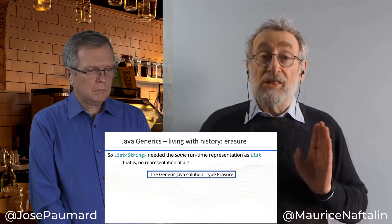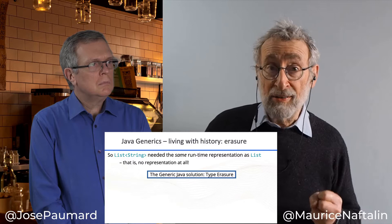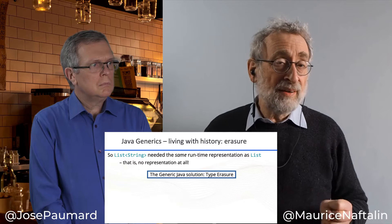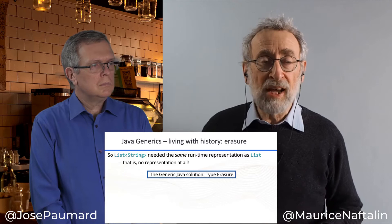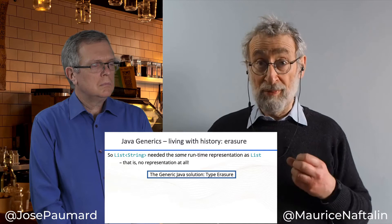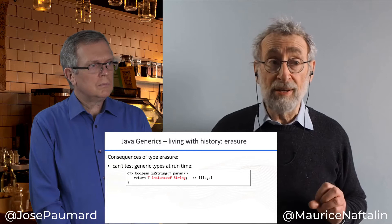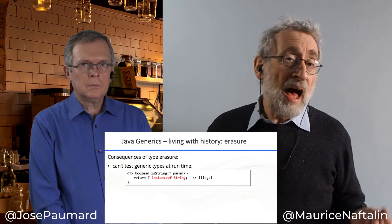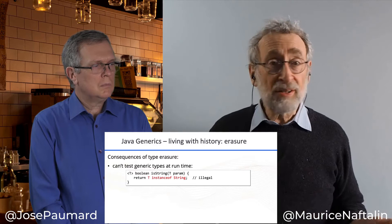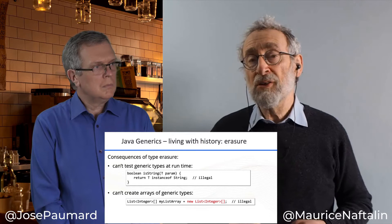Type erasure is a method by which generic types are used by the compiler to do strict type checking at compile time and are then discarded — the generic information does not persist at runtime. You get all the advantages of generic types at compile time, but the drawback is you don't get to use them at runtime. One consequence is that you can't do a runtime test like instanceof on a parametric type, because the type T has been erased.